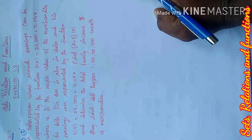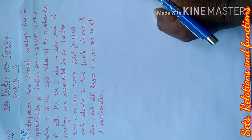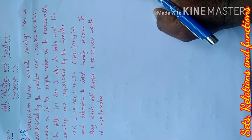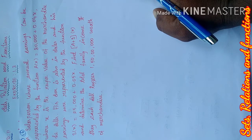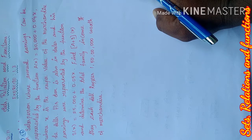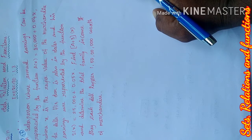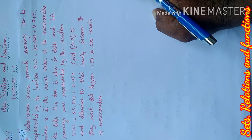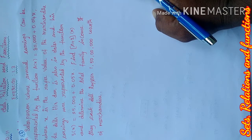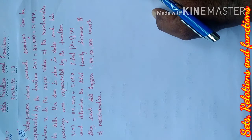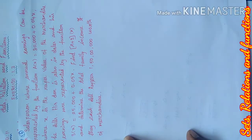The son is also in sales and his earnings are represented by the function S(x) = 25,000 + 0.05x. Find A + S(x) and determine the total family income if they each sell rupees 1,50,000 worth of merchandise. Let's look at the solution.